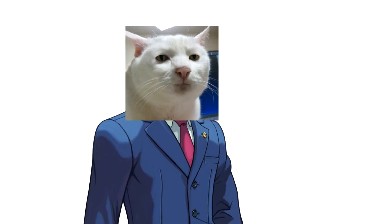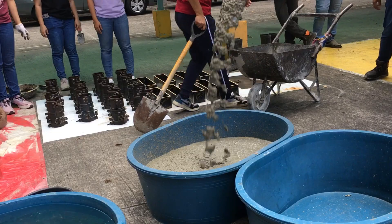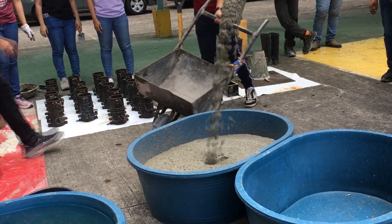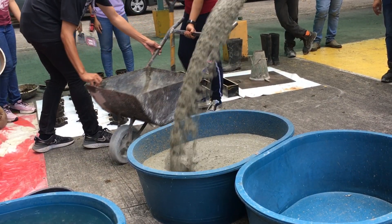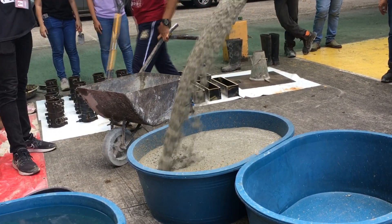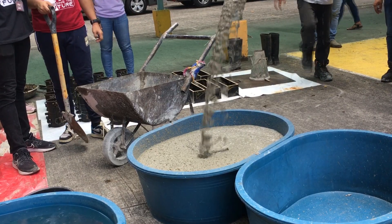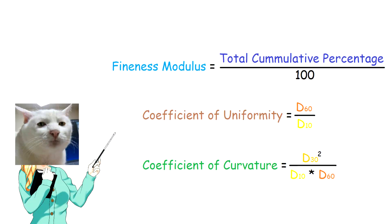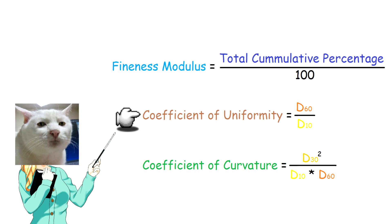Sieve test is performed to evaluate grading and to gain information regarding particle size distribution of fine aggregate. Aggregate gradation influences the workability of concrete mixes because it affects the water-cement ratio and the paste-aggregate ratio. The sieve test is also performed to evaluate the fineness modulus, the coefficient of curvature, and the coefficient of uniformity.